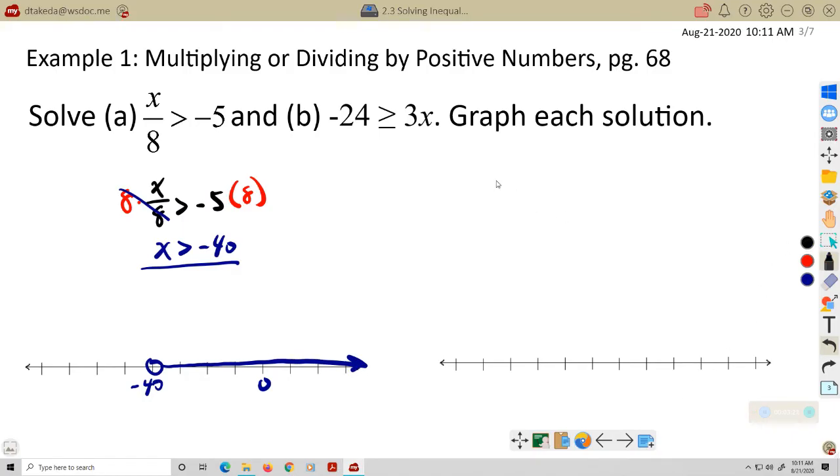For example B, negative 24 is greater than or equal to 3 times X. I can divide both sides by a positive 3 here. And that gives me negative 8 is greater than or equal to X. And if I wanted to think about this, if I want to flip this around for graphing, X is less than or equal to negative 8.